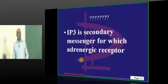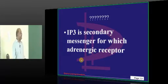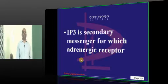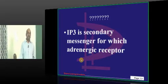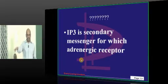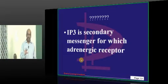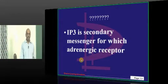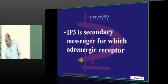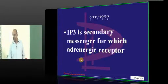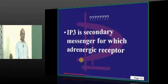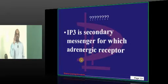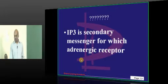IP3, inositol triphosphate — which adrenergic receptor uses it as a secondary messenger? The options are alpha-1, alpha-2, beta-1, beta-2, beta-3. IP3 is the secondary messenger for only one of them — inositol triphosphate. Anjum says alpha-1, Shravya from Guntur says alpha-2.